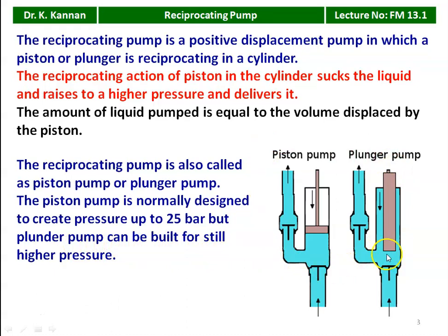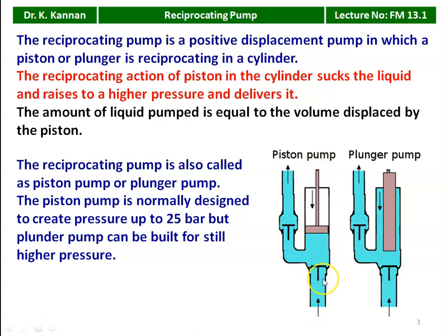Looking at the two diagrams — the first is the piston pump and the second is the plunger pump. There is a piston reciprocating inside the cylinder, with an inlet valve which is a one-way valve. When a vacuum is created in the cylinder, the valve automatically opens and liquid is admitted. When the piston moves downward, the pressure rises, the valve closes. On the other side, when pressure increases, the delivery valve opens and liquid is discharged to the delivery pipeline. This is the suction pipeline and this is the delivery pipeline.